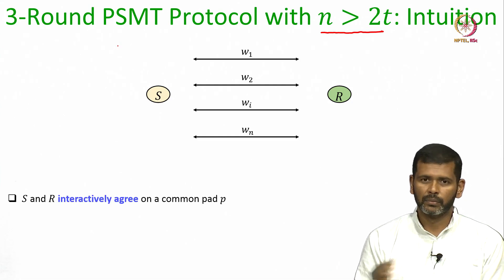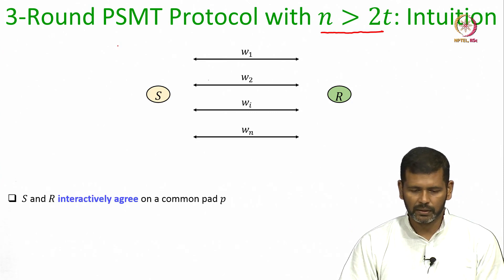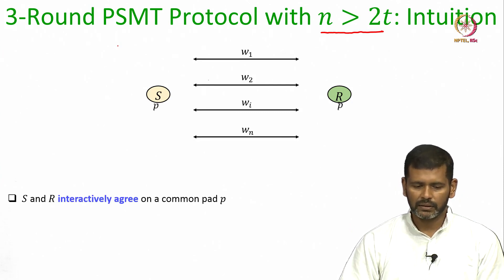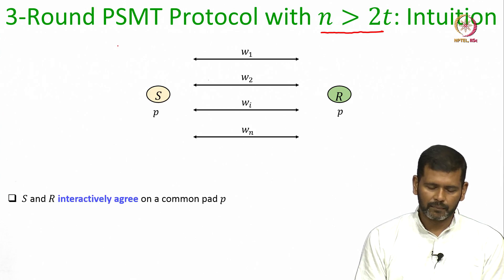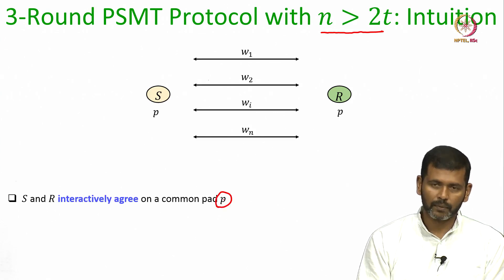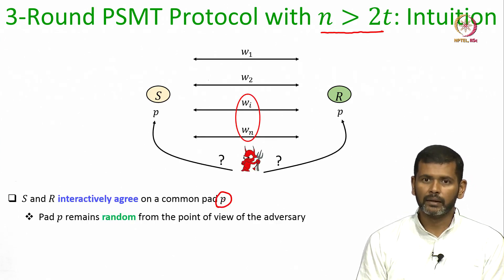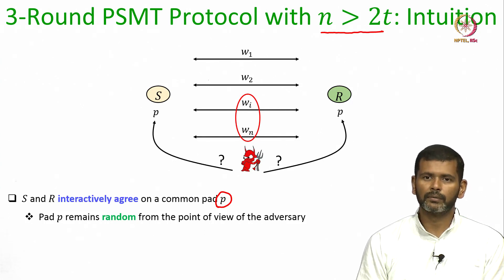Interaction at both ends is possible. S can talk to R, R can send feedback to S, and once they are done interacting, at the end of that interactive protocol both of them should agree upon a common pad P which should be random from the viewpoint of the adversary who has observed the communication over t channels.